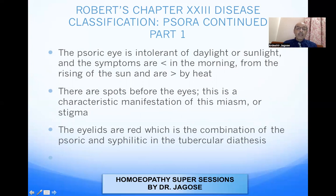The patient sees brown or black dots or black floaters before the eyes. The eyelids are red, which is a combination of SORIC and SYPHILITIC in the tubercular diathesis. The red eyelids are especially seen in the tubercular diathesis, which is a combination of the SORA and the SYPHILITIC miasm.